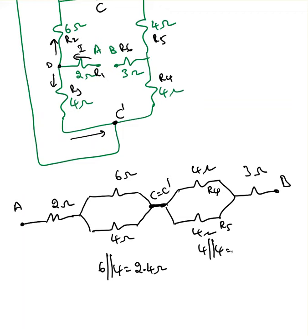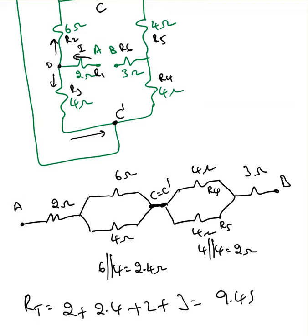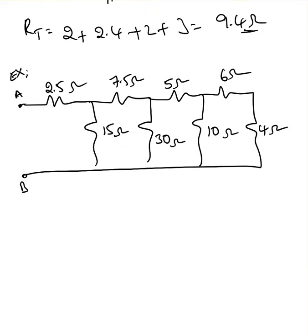And 4 parallel with 4 equals 2 ohms. So R_total equals 2 plus 2.4 plus 2 plus 3, which is 9.4 ohms. Here is the next example — the question asks us to find the total resistance R_AB. This circuit is called a ladder circuit because it looks like a ladder.